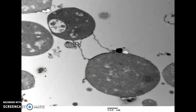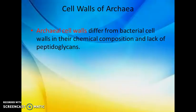These are called L-forms. Next is about cell walls of the Archaea. Archaea cell walls are different from bacterial cell walls in their chemical composition because of the lack of peptidoglycan — murein is absent in Archaea cell walls but is present in bacteria. That is the main difference between the bacterial cell wall and the Archaea cell wall.